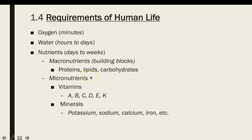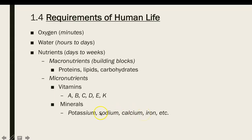Micronutrients are things needed in lesser quantities but crucial to life, including vitamins and minerals. Vitamins A, B, C, D, E, and K are ones we often think about. Some can be stored and some cannot — water-soluble vitamins are not stored, while lipid-soluble vitamins can be stored. We have a whole chapter on this later. Minerals are also required — potassium, sodium, calcium, iron, chlorine, and a number of others are required for metabolism as well.